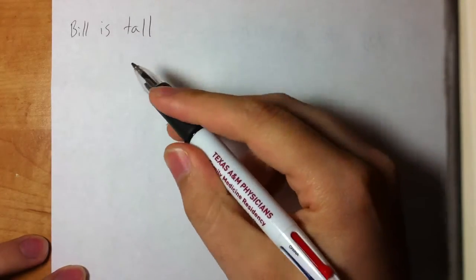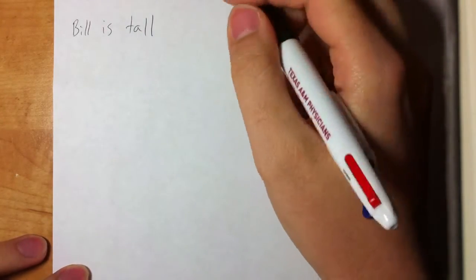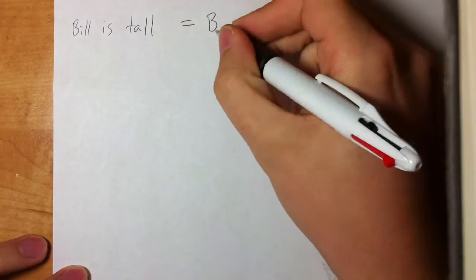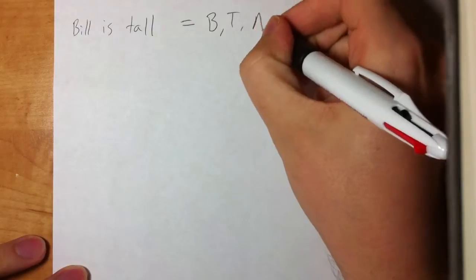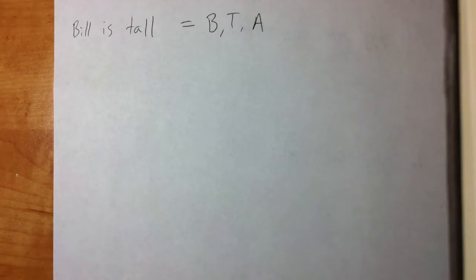This section is predicate logic, section 9.1 from The Power of Logic, and it talks about symbolization in more depth. In the past, the way we would symbolize 'Bill is tall' is just with a simple atomic statement letter — something like B, T, A, whichever atomic statement letter you wanted to use. You could symbolize one whole statement with just one letter.